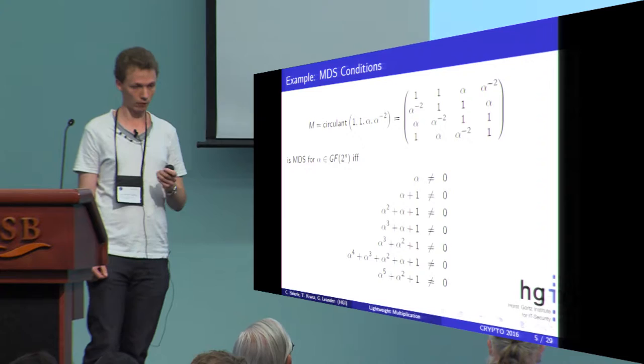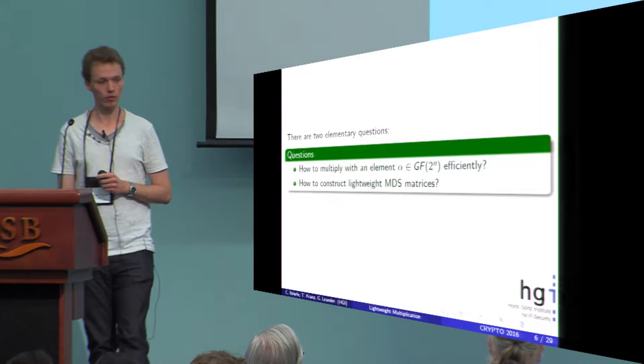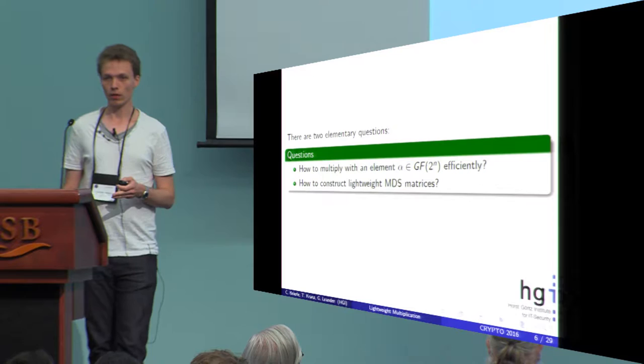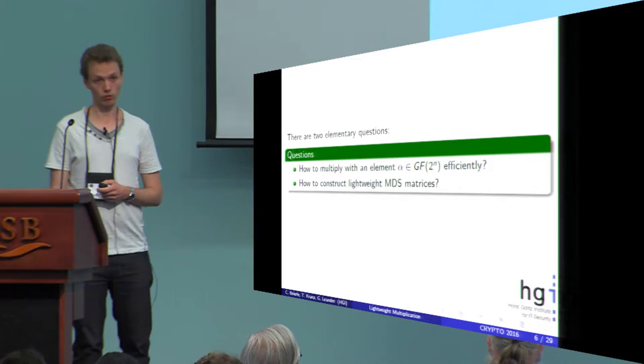So then we have two elementary questions we want to address. The first is how to multiply with an element alpha most efficiently. And the second question is how to use the knowledge of the efficient multiplication with a fixed element to construct lightweight MDS matrices.